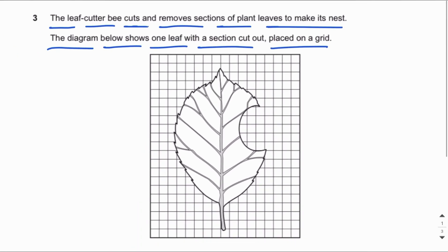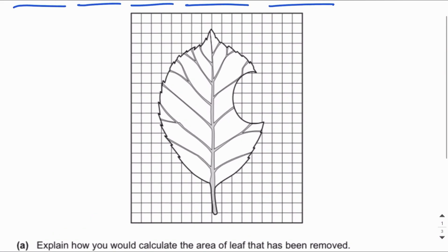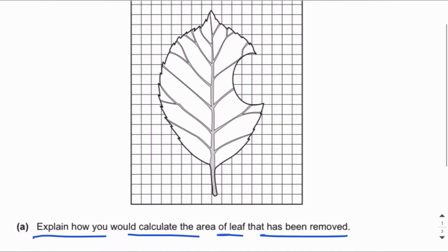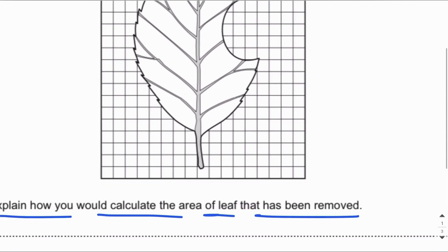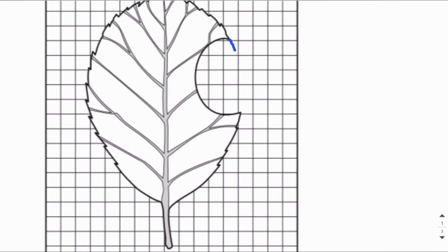In this question, the leaf cutter bee cuts out a part of the leaf and uses it to make its nest. We can see the leaf and the cutout part placed on the grid. What we have to do is write down how we would calculate the area of the leaf that has been removed — that is, the part removed by the cutter bee.